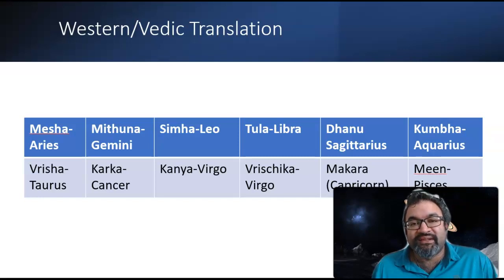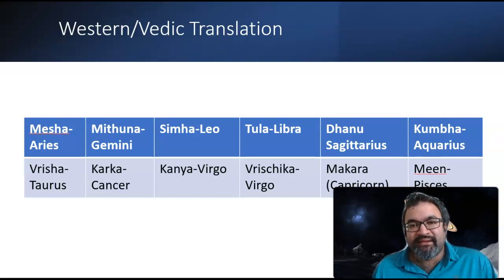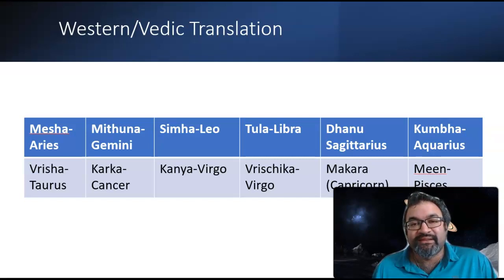Libra is Tula — the balancing of different sides. Scorpio is Vrishchik or Vrishchika. Sagittarius is Dhanu, and Dhanu literally means bow and arrow. If you think about the weapon that Sagittarius, the centaur, holds, it is indeed a bow and arrow.